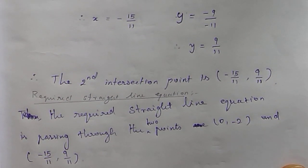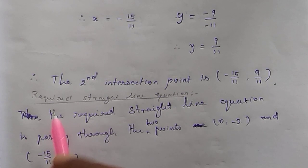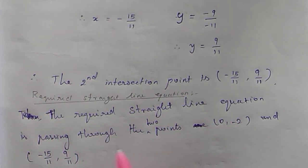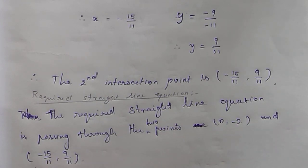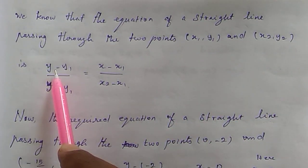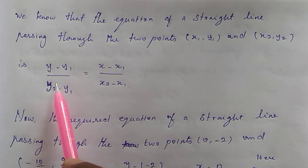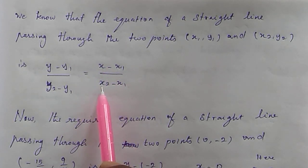Now we have the two points, so we can find the required straight line equation. We know that the equation of a straight line passing through two points (x1, y1) and (x2, y2) is: (y − y1)/(y2 − y1) = (x − x1)/(x2 − x1). The required line passes through (0, −2) and (−15/11, 9/11), where (0, −2) is (x1, y1) and (−15/11, 9/11) is (x2, y2).